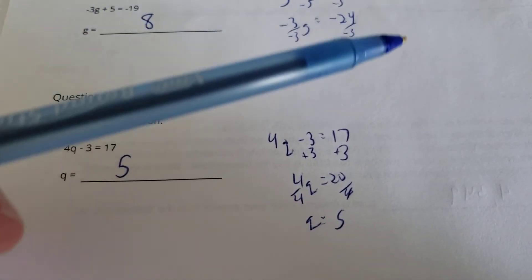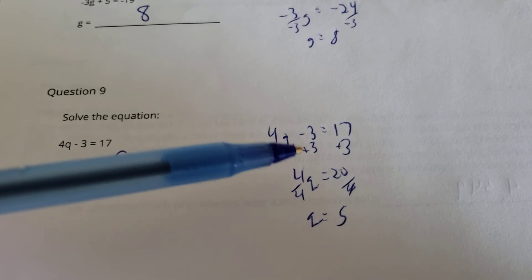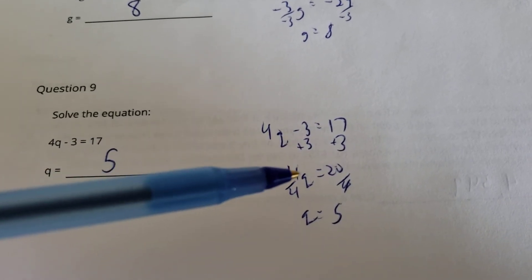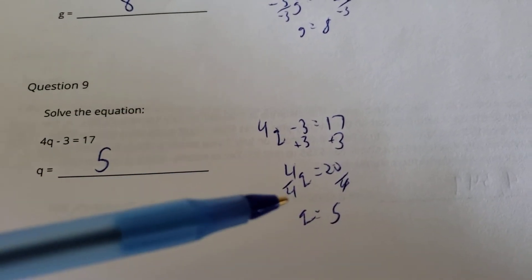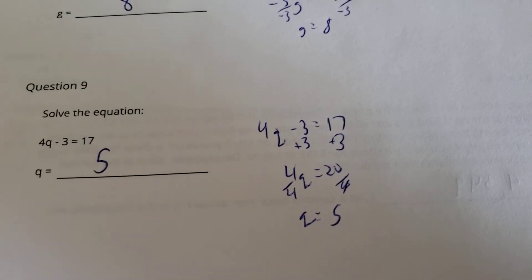Here's our equation next. First, I get rid of the minus 3 by plus 3 to each side, and I get 4Q equals 20. Divide each side by 4, and I get Q equals 5.